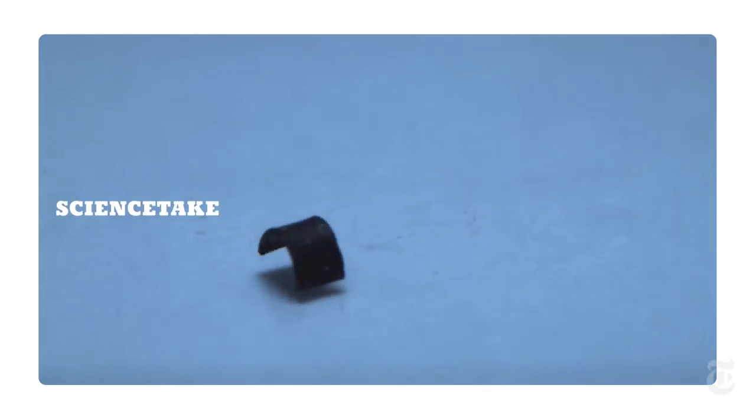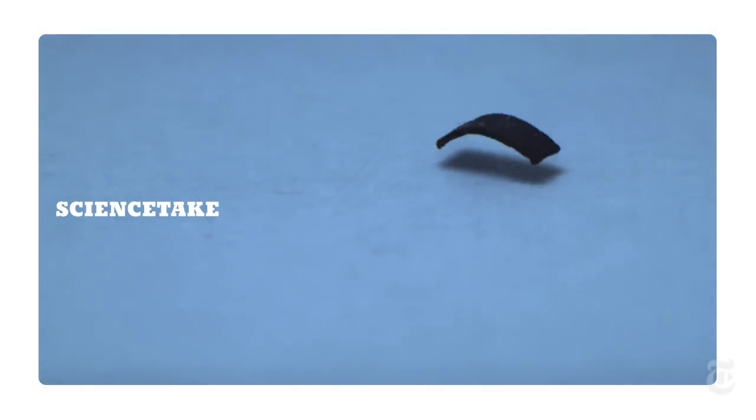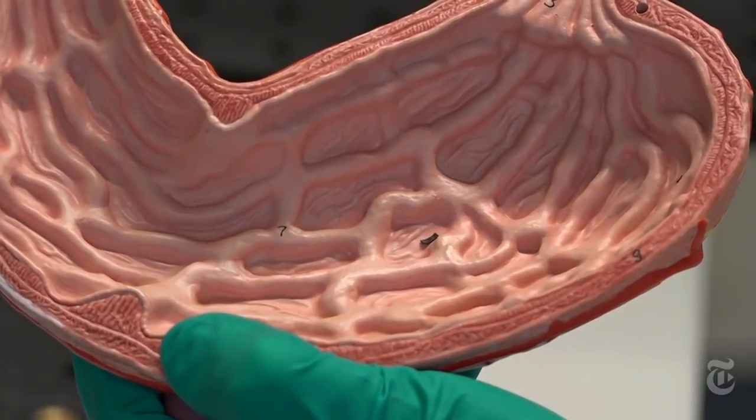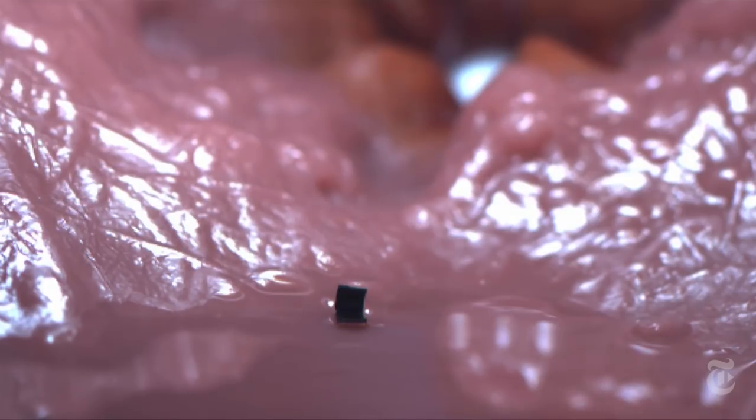This little bit of rubber that looks almost like a new toy is a robot. It's so small, just a little bit over a tenth of an inch, that it could easily move around inside your body.